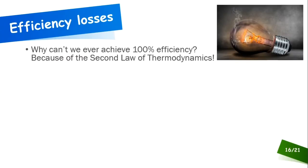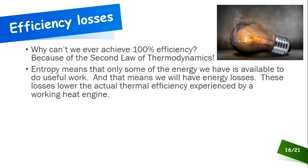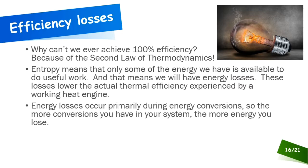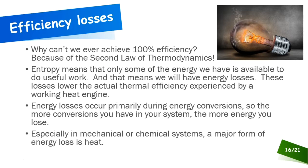Why can't we ever achieve 100% efficiency? Because of the second law of thermodynamics. Due to entropy, only some of the energy we have is available to do useful work, with an unavailable portion representing energy losses. These losses lower actual thermal efficiency from a working heat engine. Energy losses occur primarily during energy conversion — the more conversions between different energy forms, the more energy lost, and the less efficient the system. A major form of loss in mechanical and chemical systems is radiant energy in the form of heat.